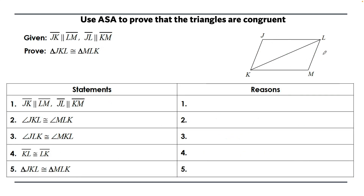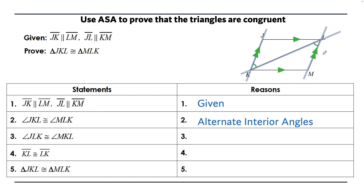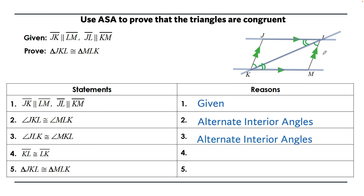Next proof: JK is parallel to LM and JL is parallel to KM — that's given, marked with arrows. Statement two: angle JKL is congruent to angle MLK because we have two parallel lines cut by a transversal, giving us alternate interior angles. Statement three: angle JLK is congruent to angle KLJ — again, alternate interior angles from parallel lines. Statement four: KL is congruent to KL by the reflexive property. The triangles are congruent by angle-side-angle.